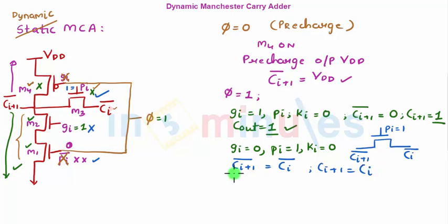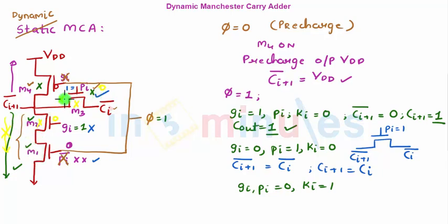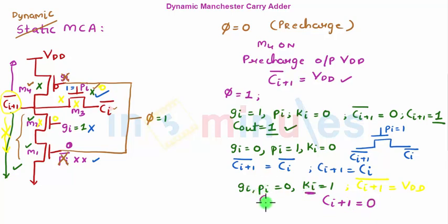Third case: KI equals one, so generate and propagate are both zero. Both M2 and M3 are NMOS with zero inputs, so they are off. The pass transistor is also off, so the output holds its pre-charged value — CI+1 bar equals VDD, meaning CI+1 equals zero. When K is one we want Cout to be zero, so functionality is achieved.